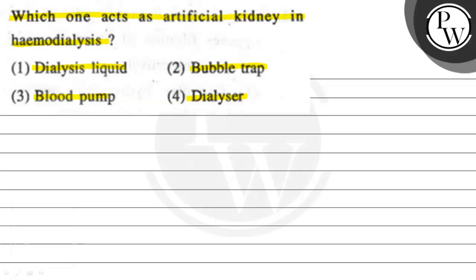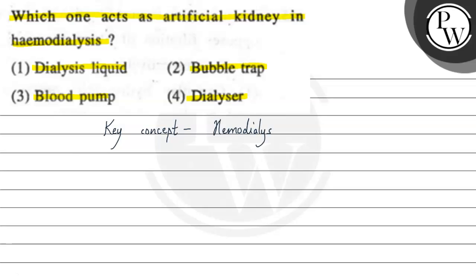This question is asked: which is the one that works as the artificial kidney in hemodialysis? So let's look at the concept of hemodialysis. Hemodialysis is basically a treatment for kidney failure. In this case, an artificial kidney filter is used to filter the blood.